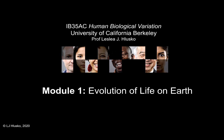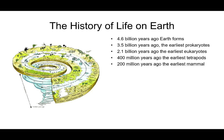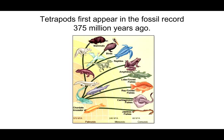We touched a little bit on this by thinking about those unicellular organisms, and now I'm going to introduce you to the earliest four-legged animals, the tetrapods. They show up about 400 million years ago in the fossil record. The earliest mammals will come next, and they first appeared in the fossil record about 200 million years ago.